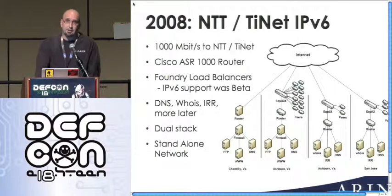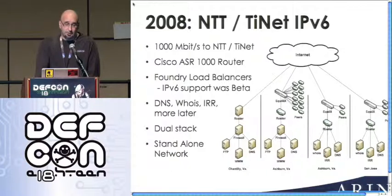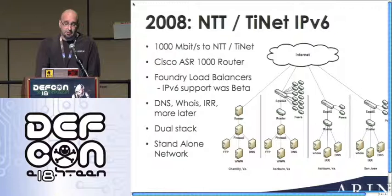Just about everything you can get to publicly we were placing on these networks. They were dual stack by default, completely standalone stub networks. We bought all new gear — fairly new at the time Cisco ASR routers, I think 1004s — all gigabit. They worked really, really well. No problems with those.